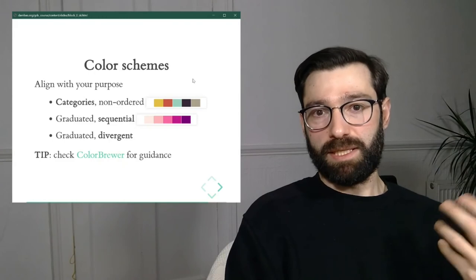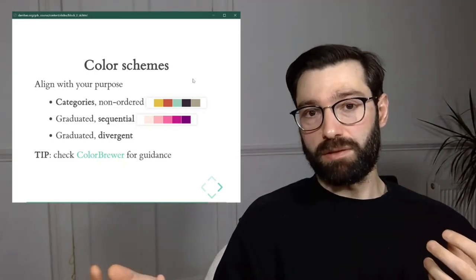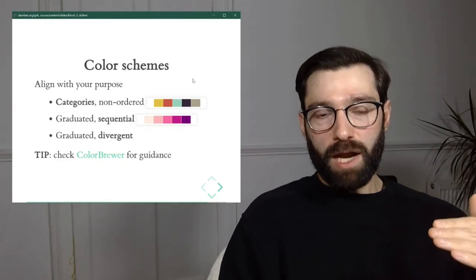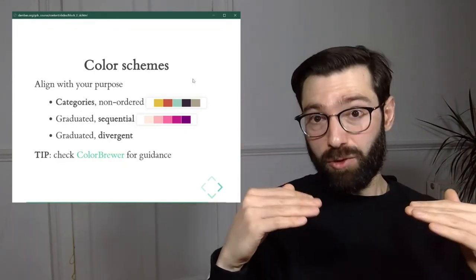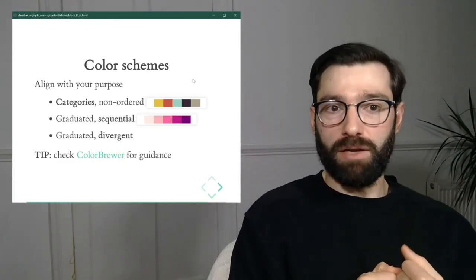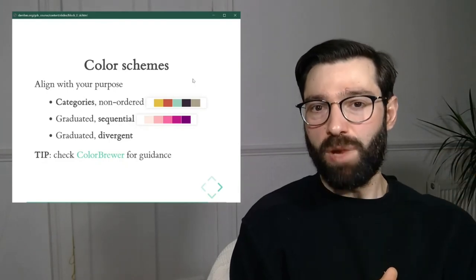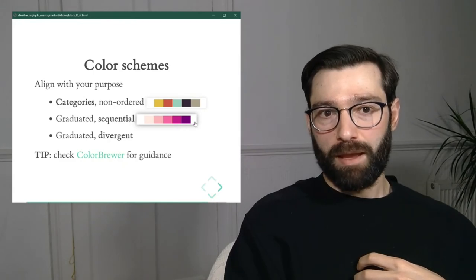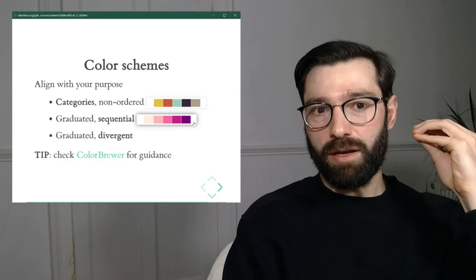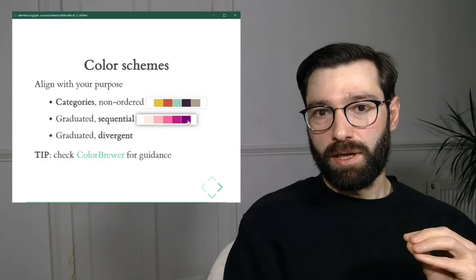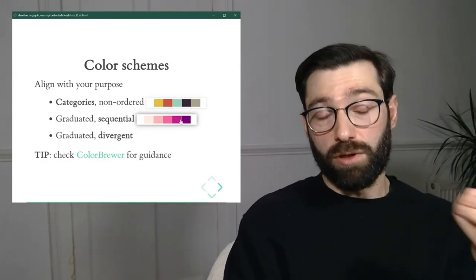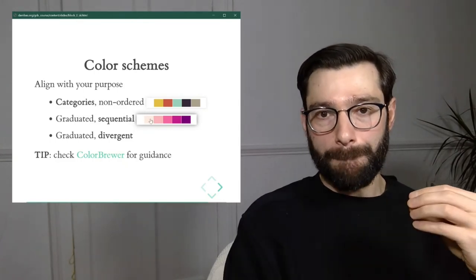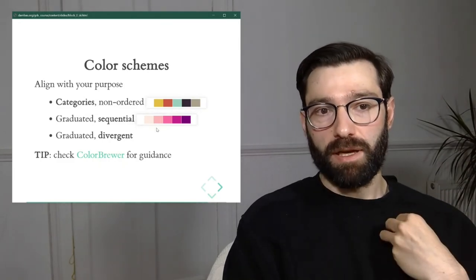The second palette type is graduated or sequential. This is for continuous data where one value is clearly more or less than another, and we can tell by how much. Here we go from light pastel all the way to dark purple. Our brain's pattern-processing engine understands that dark purple represents a higher value than lighter purple — there's an implicit hierarchy and set of proportions encoded in this type of palette.